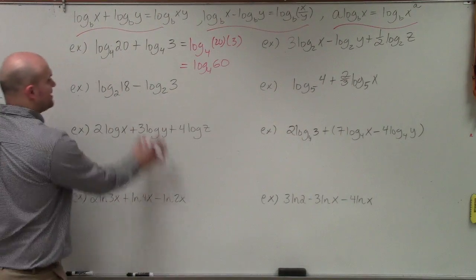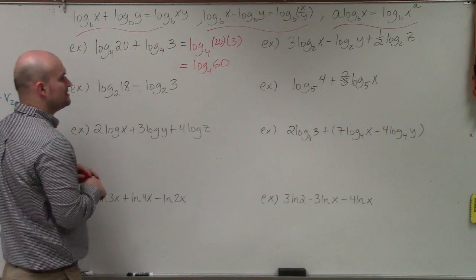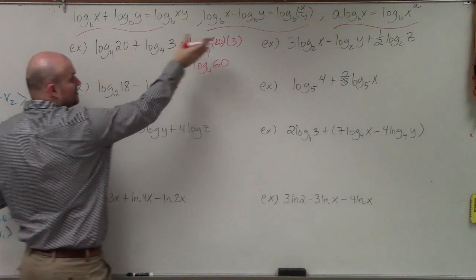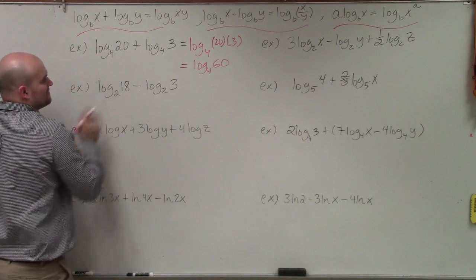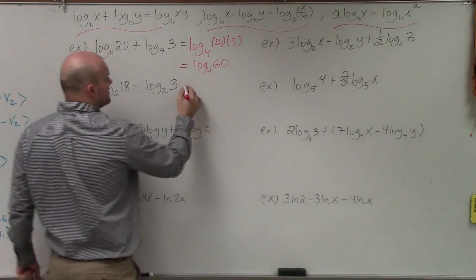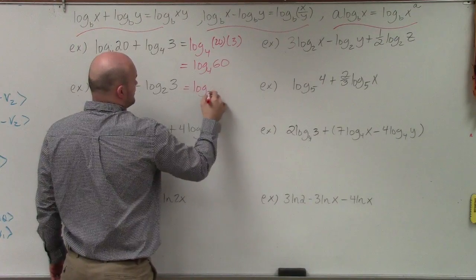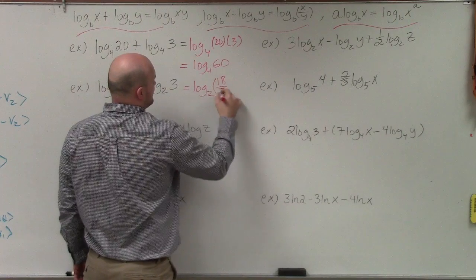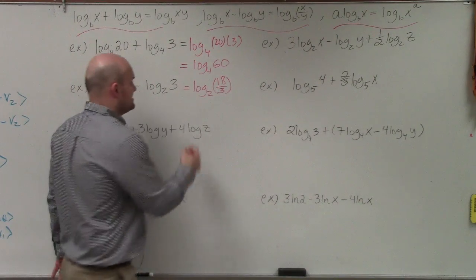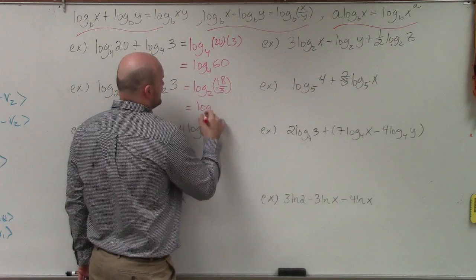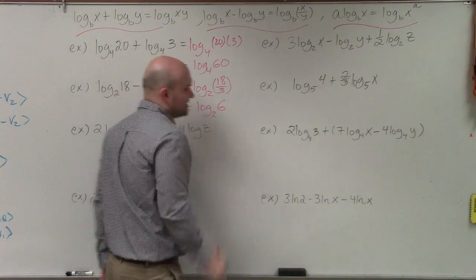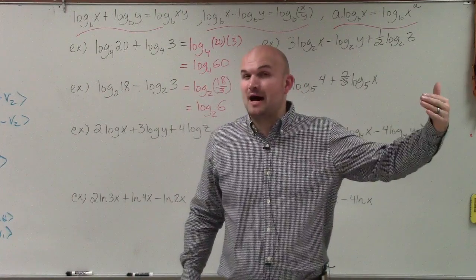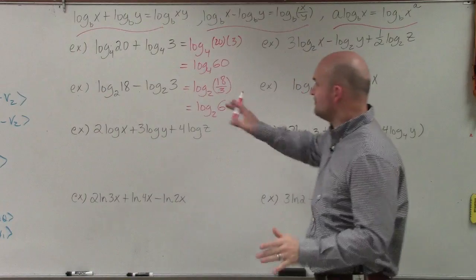The next problem has division. When you have logarithm terms separated by subtraction, you can rewrite them as the quotient in one single logarithm. So this would be log base 2 of 18 divided by 3. Since 18 divided by 3 is 6, I can rewrite this as log base 2 of 6 — and that's not something I can simplify further, so I'll leave my answer as is.